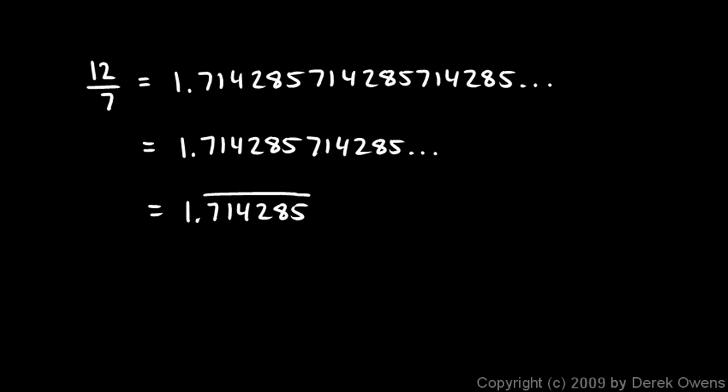But the main thing to remember from this is that whenever you have a rational number. One integer divided by another. A over B. And A and B could be any integers. When you actually do the division you will always get a terminating decimal or a repeating decimal. One or the other.